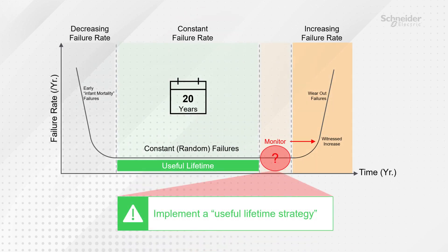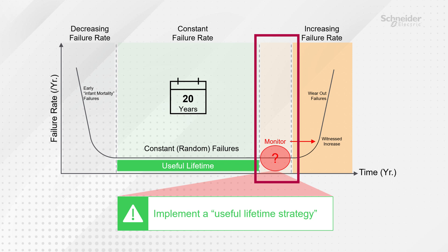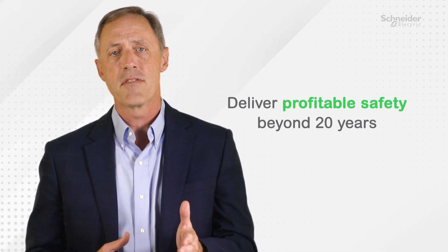If a user continues to operate past 20 years, the failure rate should be monitored to verify that they are not increasing beyond the steady state rates. It's possible to extend a tire's life by things such as driving responsibly and maintaining proper air pressure. In a similar manner, proper oversight of your electronic safety systems can enable them to deliver reliable safety beyond 20 years.